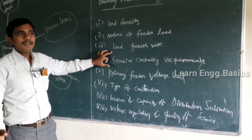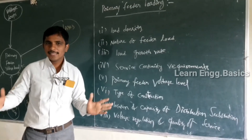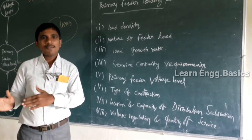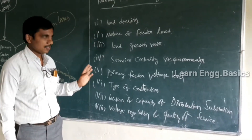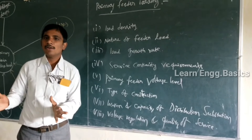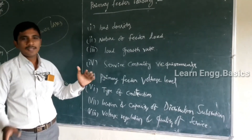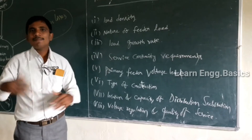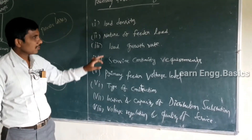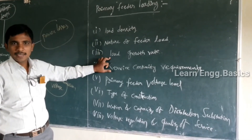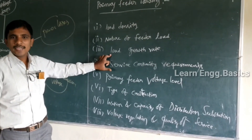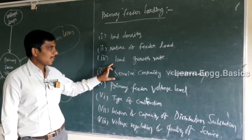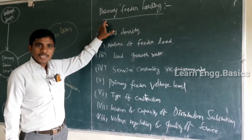Load growth rate — how much load is increasing per year in towns and cities — also affects primary feeder loading. As cities and streets expand, construction of houses increases. If load growth increases but the distribution transformer at the street remains the same, the load on it increases per year. Therefore, if the load growth rate increases, we have to replace or increase the distribution transformer. They calculate the growth rate in towns and cities and accordingly replace or install new distribution transformers.